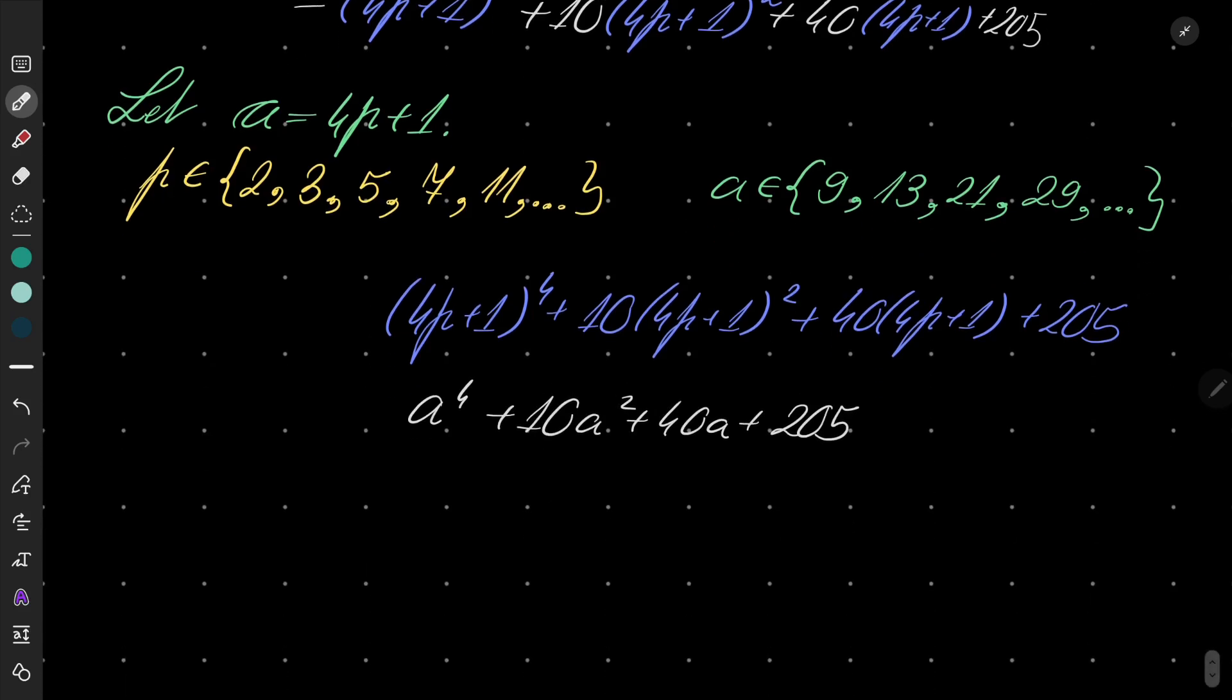Okay, now, the first inequality will be pretty obvious. Plus 25. This inequality is obviously true, because here I have plus 40 times some positive number and here I have 205.